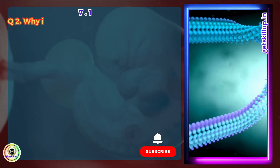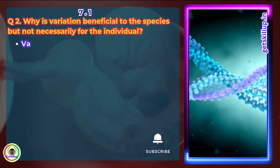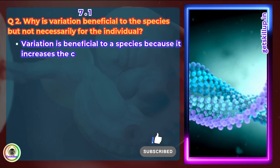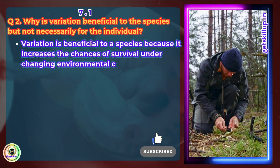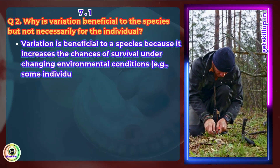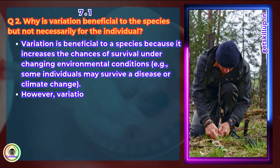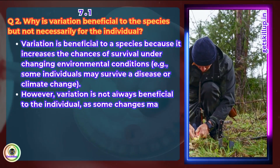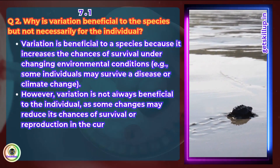Question 2: Why is variation beneficial to the species but not necessary for individuals? Variation is beneficial to the species because it increases the chances of survival under changing environmental conditions — some individuals may survive a disease or climate change. However, variation is not always beneficial to the individual, as some changes may reduce its chances of survival or reproduction in the current environment.